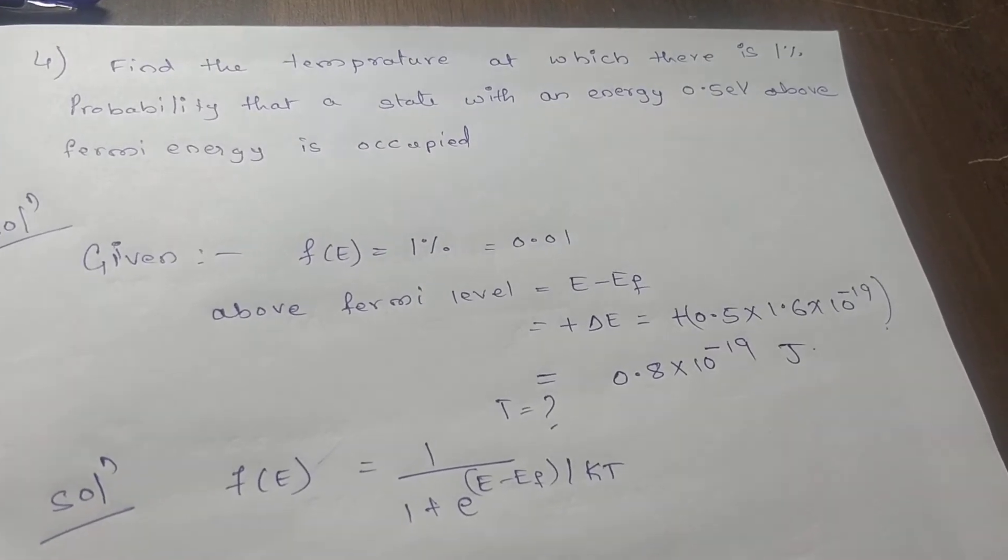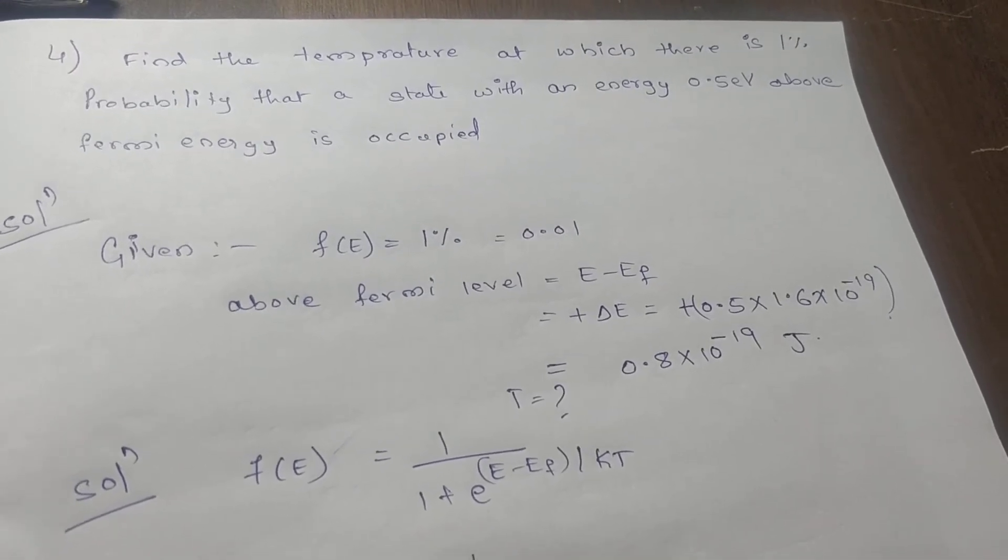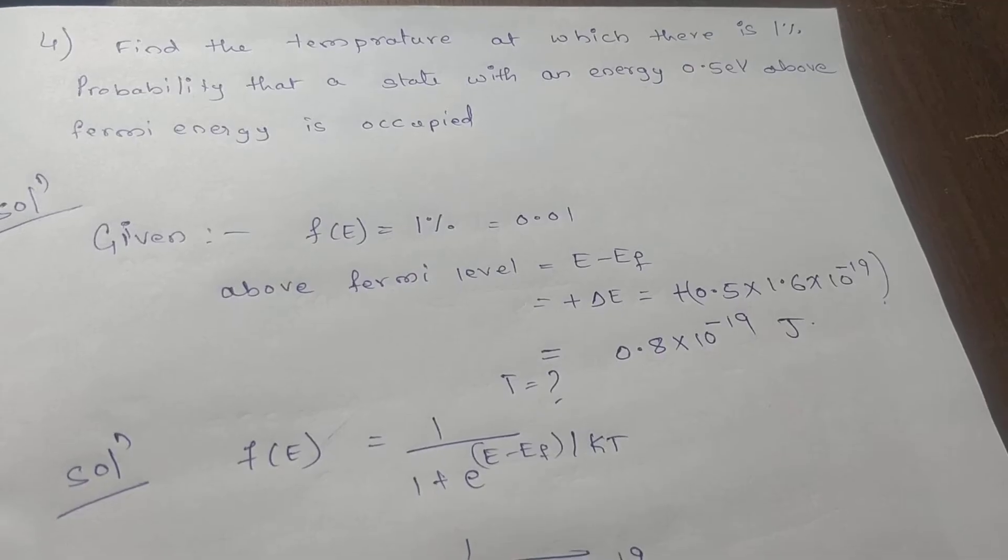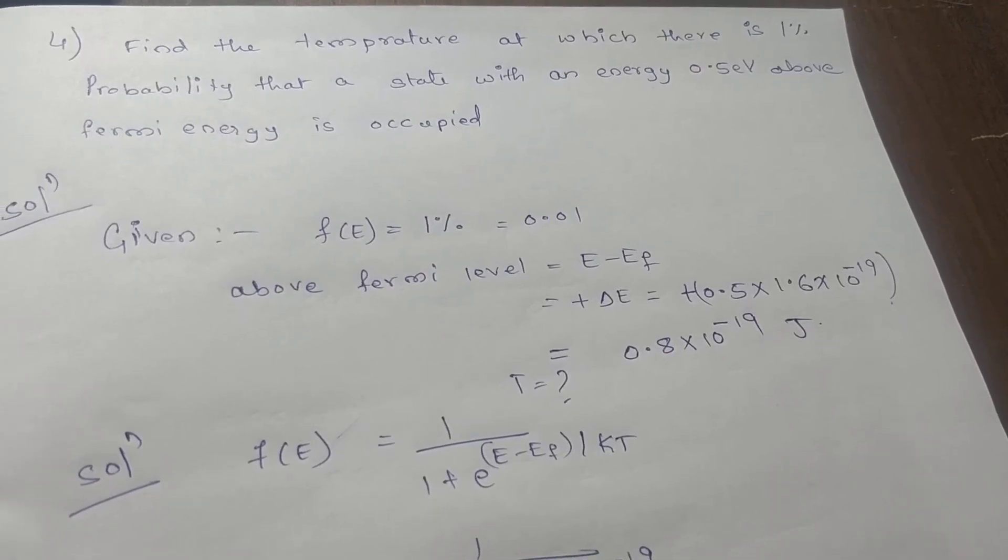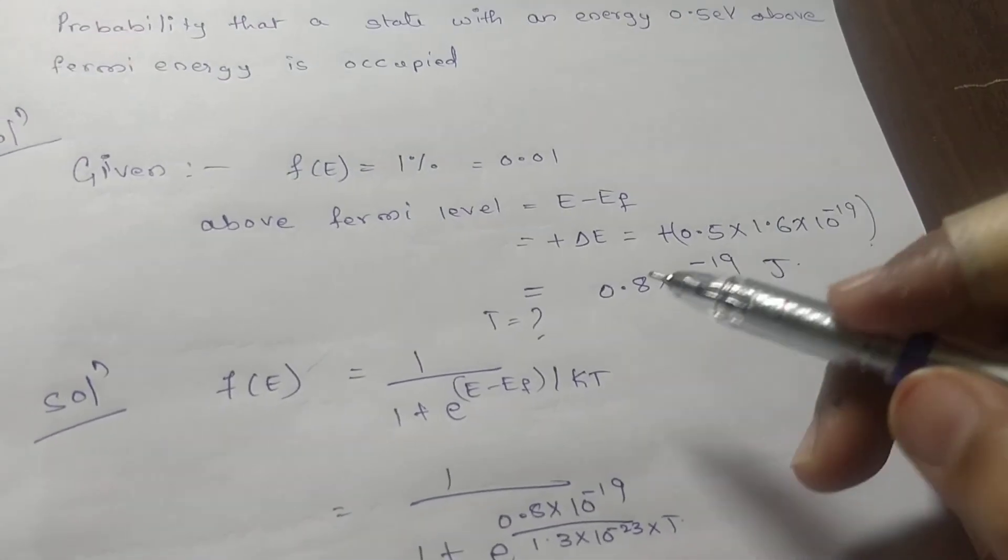In percentage they have given, convert in terms of number. Above Fermi level, so e minus ef value will be plus 0.5 electron volt. Convert it in terms of joules and what we have to find? We have to find the temperature.